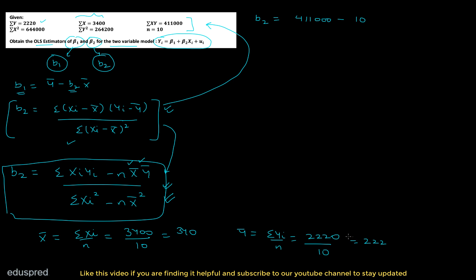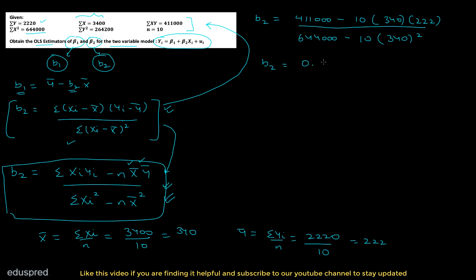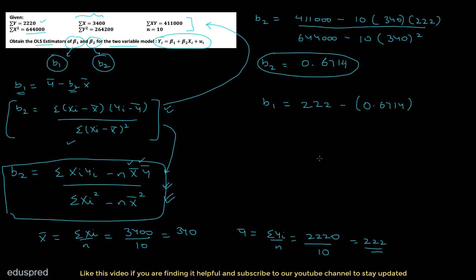So x-bar is 340 and y-bar is 222. Plugging these into the formula: the numerator uses summation of x*y and n*x-bar*y-bar, while the denominator uses summation of xi-squared — which is 6,400,000 — minus n times x-bar squared, which is 10 times 340 squared. Solving this gives b2 equals 0.6714. Then b1 equals y-bar minus b2 times x-bar, which is 222 minus 0.6714 times 340, giving b1 equals minus 6.276.